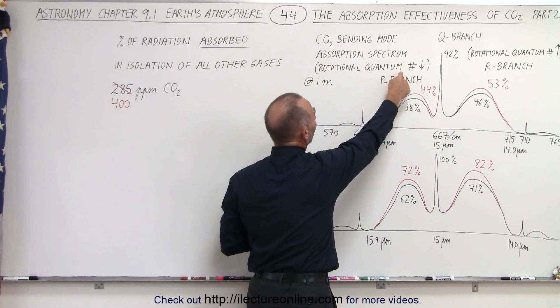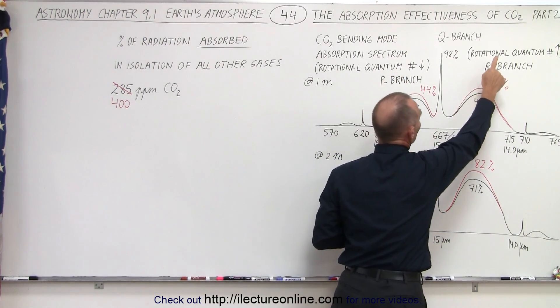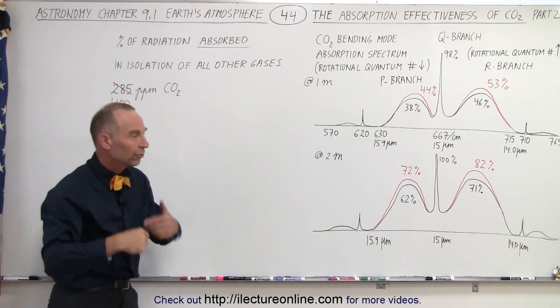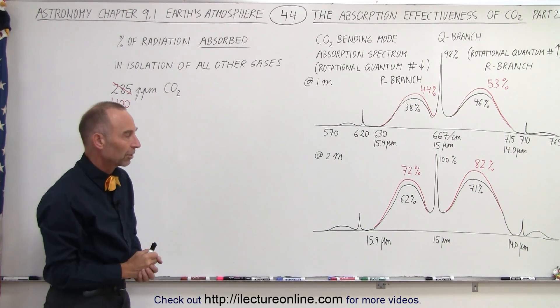The P branch, it's a drop of one, and the R branch, it's a rise of one in the quantum number of the rotational modes on top of the vibrational modes of the carbon dioxide molecule.